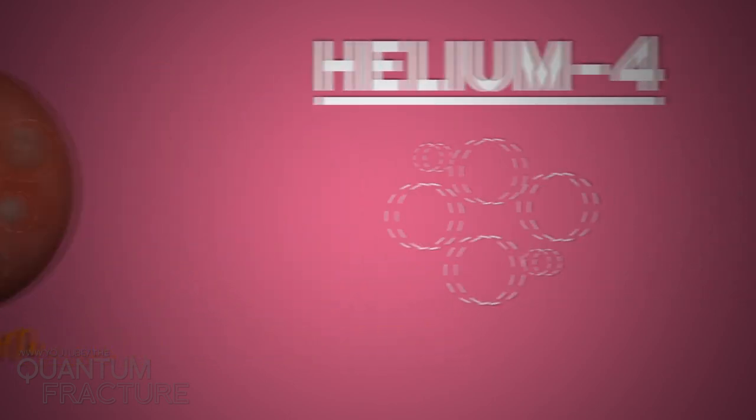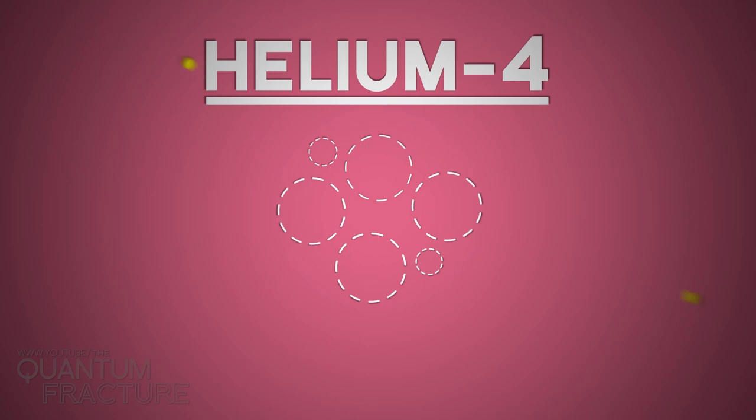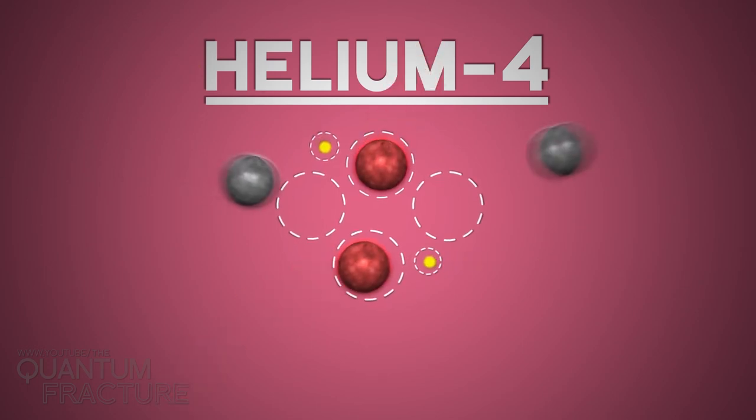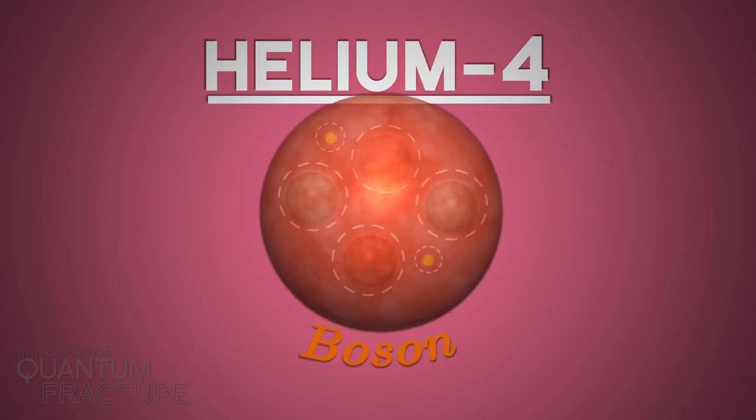In the case of helium-4, it's easy. Two electrons, two protons, and two neutrons together act like a boson. That's why when helium-4 is cooled, it forms a superfluid.